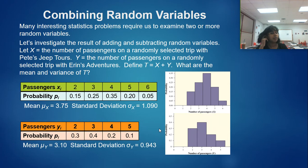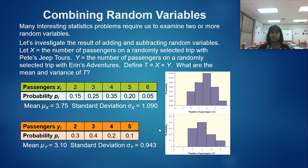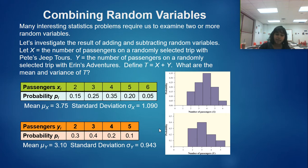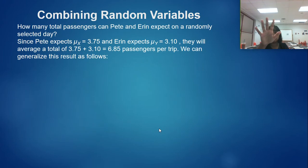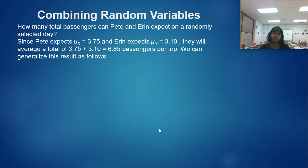So T is going to be our total. We want to know the mean and variance of T — not X or Y individually, but the combined total. Breaking down the probability distributions for X and Y based on Pete and Erin, we can calculate the mean and standard deviation for each. The question is: how do we take information separated as X and Y and combine them into a T value?